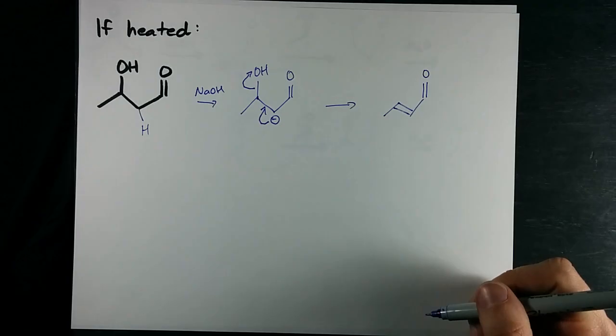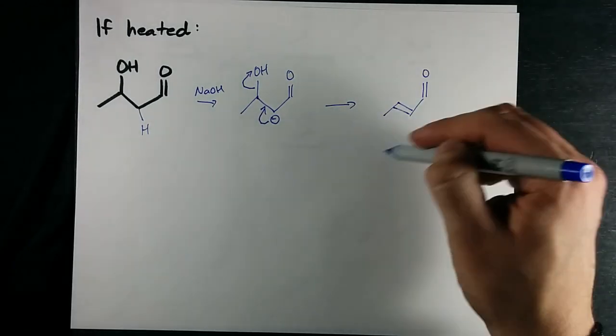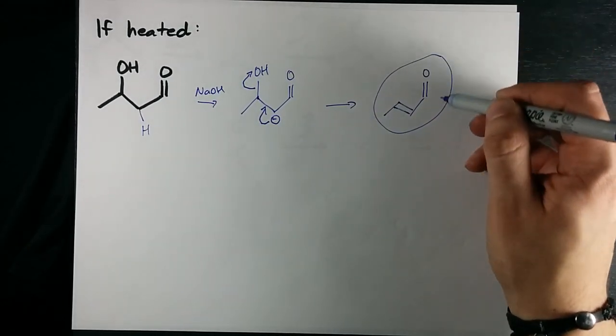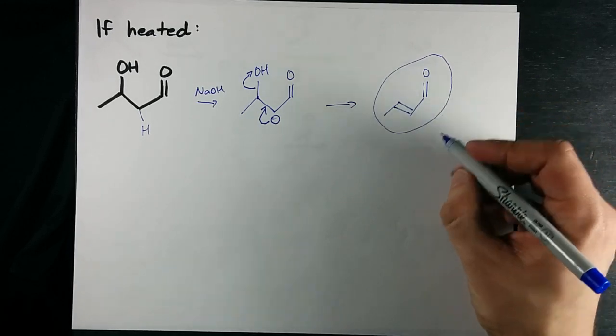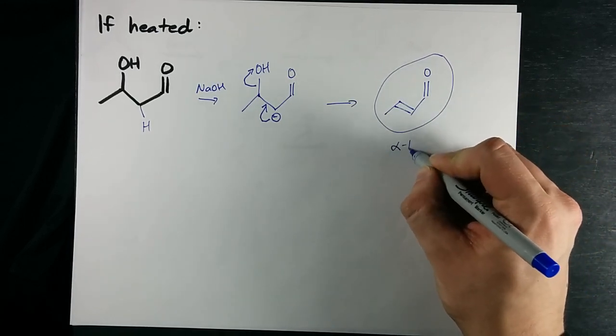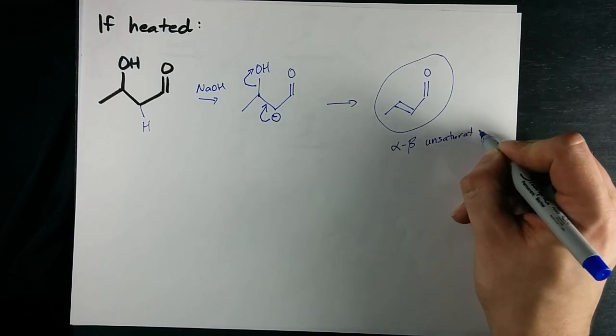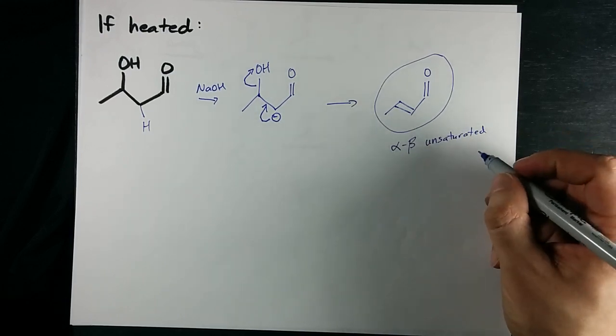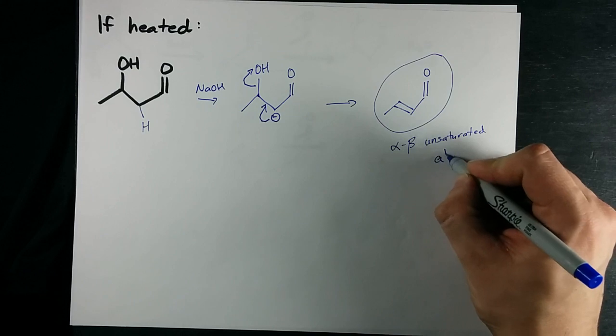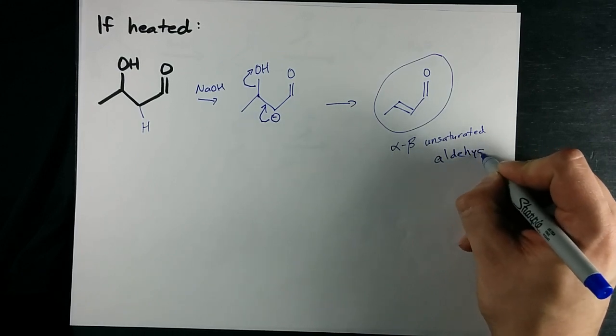And then I still have my double bonded oxygen there and I end up with this product, the alpha beta unsaturated aldehyde. I'm even going to write that out because I remember hearing it a lot when I was in organic chemistry back in the day. Alpha beta unsaturated aldehyde.